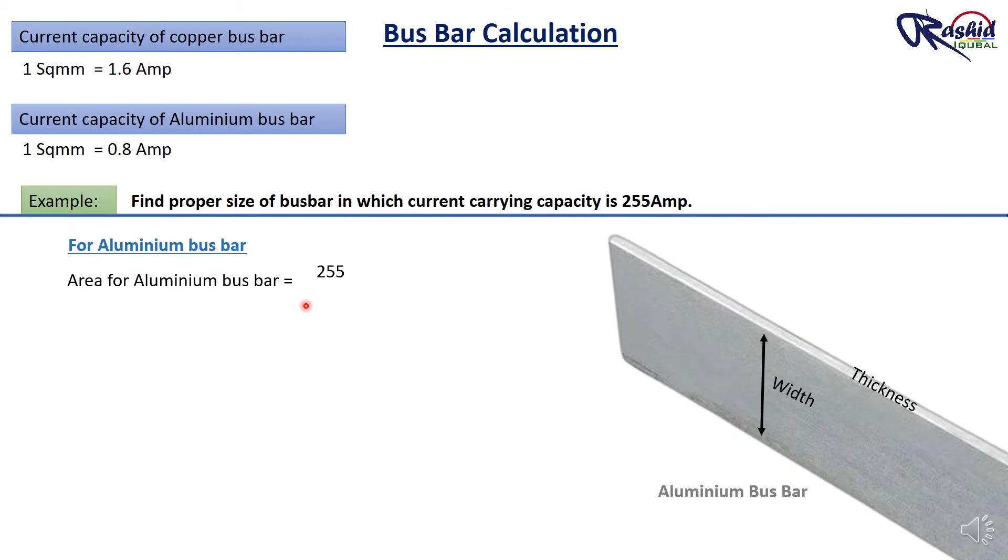The area of aluminium busbar is calculated as follows. Area equal to 255 divided by 0.8. After solving this equation, we get 318.75 square mm. That means we required 318.75 square mm aluminium, which can carry 255 ampere current.